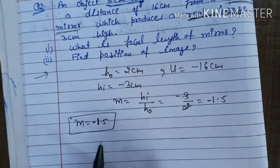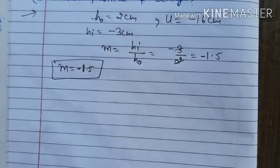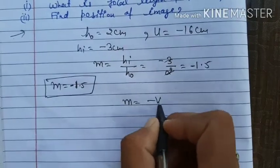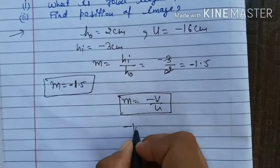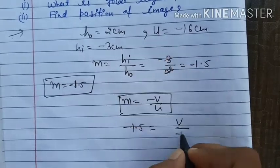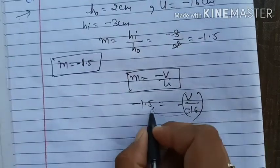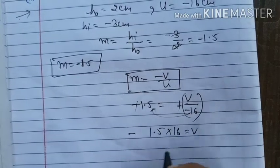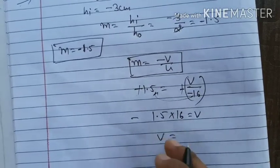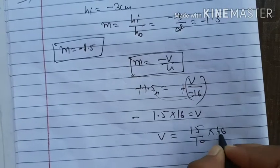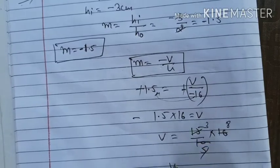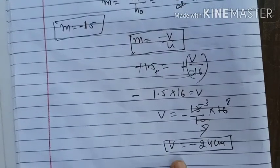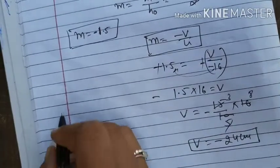Now we find the position of image. Using m = −v/u: −1.5 = −v/(−16). Solving, v = −1.5 × 16 = −24 centimeters. So the position of image is minus 24 centimeters — the image is 24 cm in front of the mirror.